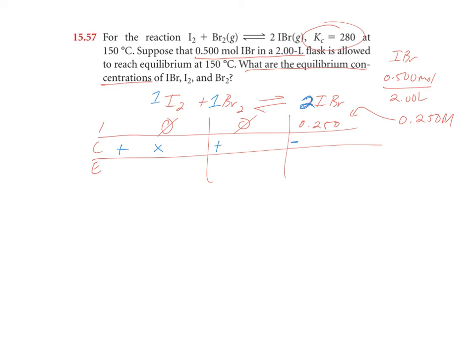So we use the variable 1x for I2. It's going to increase by that amount. And since Br2 also has a 1, it's going to increase by 1x. And since it's a 1 to 1 to 2 ratio, IBr is going to decrease by 2x, double the amount of the others. And now for equilibrium, I just do the mathematics. So 0 plus x is x. 0 plus x is x. And my decrease here is 0.250 minus 2x.